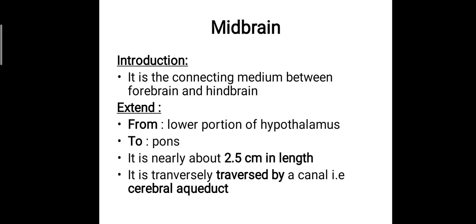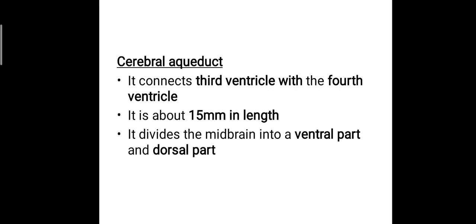There is a canal which passes through the midbrain which divides it into two parts. This canal is termed as the cerebral aqueduct. The cerebral aqueduct connects between the third ventricle and the fourth ventricle. There are four ventricles — the lateral ventricles, the third ventricle, and the fourth ventricle. The connection between the third and fourth ventricle is by the cerebral aqueduct, which is 15 mm in length, and it divides the midbrain into a ventral part and a dorsal part.